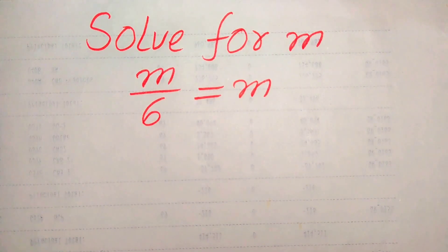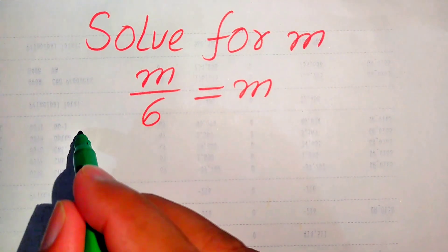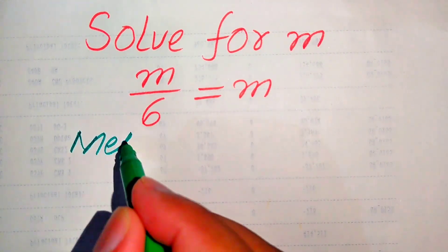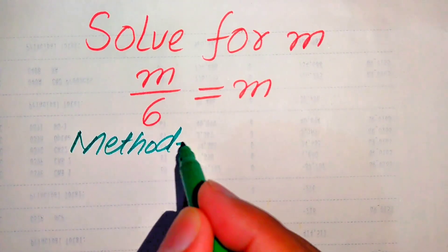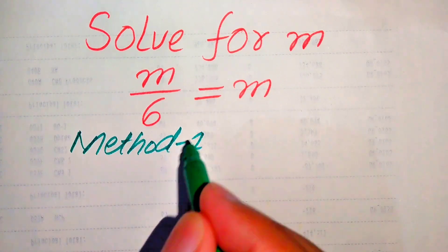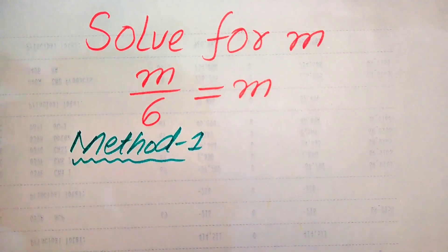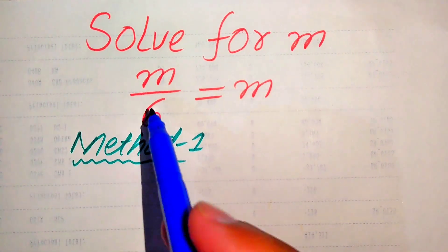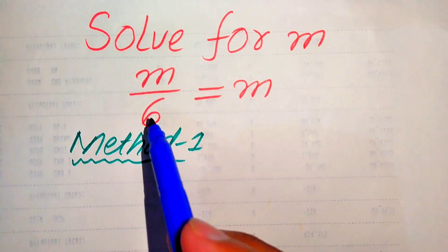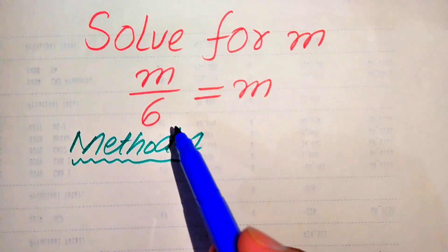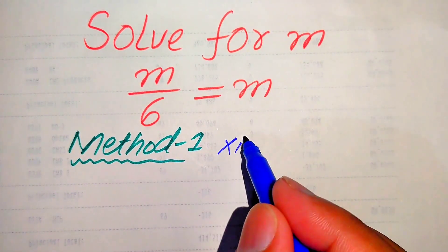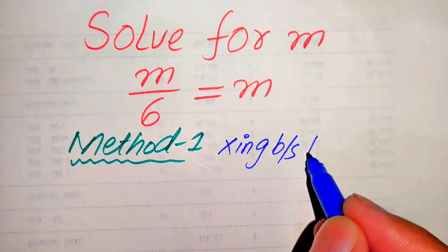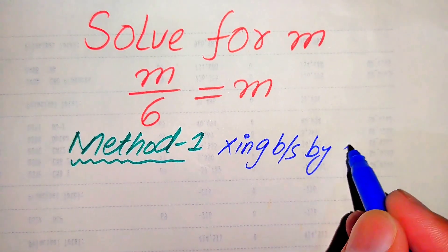In this question we solve this problem using two methods, and I hope you like both of these methods. In the first method we need to remove this fraction from the left hand side, for which we will multiply both sides by 6.